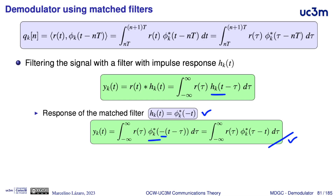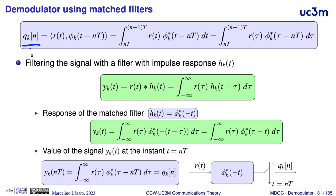Comparing the expression for the filtered signal with the expression for the kth coordinate of the signal in the symbol interval of index n, the only difference is that instead of a continuous time argument we evaluate at n times the symbol duration T. This means it is possible to compute the kth coordinate simply by evaluating the filtered signal at n times T. So we can filter the received signal with a filter matched to the kth element of the orthonormal basis, then sample at multiples of T at the beginning of the symbol interval of index n.